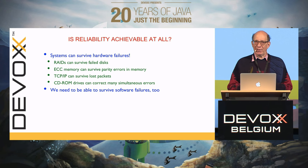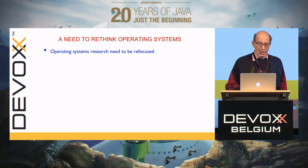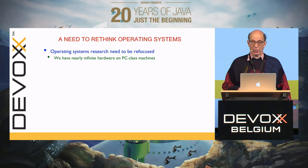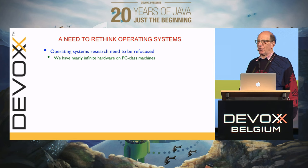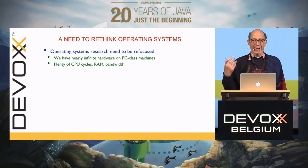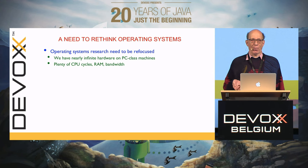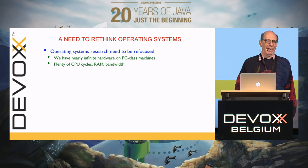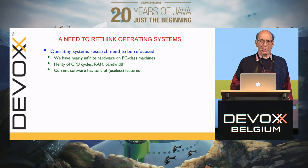If you can survive hardware failures, surely surviving software failures has got to be easier. So I think we need to rethink operating systems. We have nearly infinite hardware on current PC machines. I did a calculation and the iPad has about 30,000 times more computing speed than the CDC 6600, which was the biggest computer in the world and cost 30 million dollars. It's got 10,000 times more RAM — just like infinite computing power. So why can't we use some of that to make it more reliable?